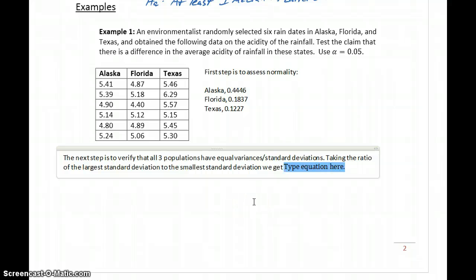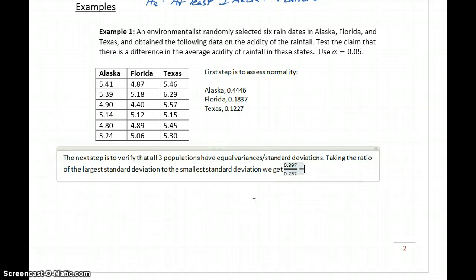Taking the ratio of the largest standard deviation to the smallest standard deviation, we get, in this case, 0.397 divided by 0.252, which will equal 1.58, which is less than or equal to 2.